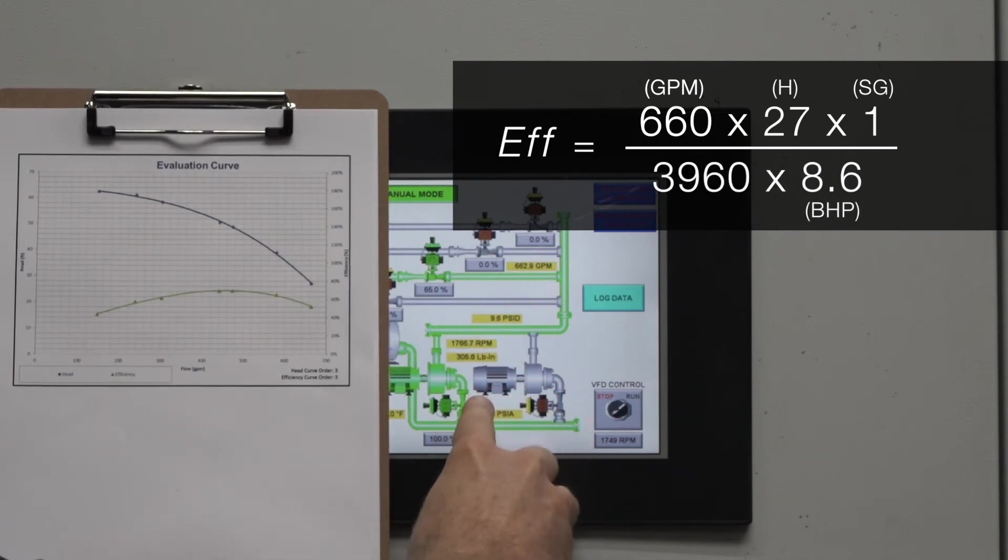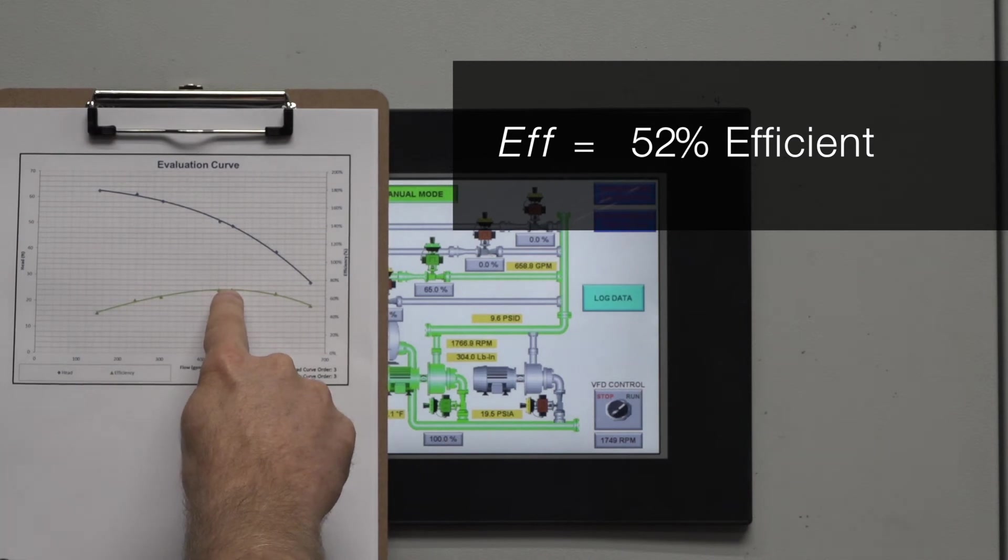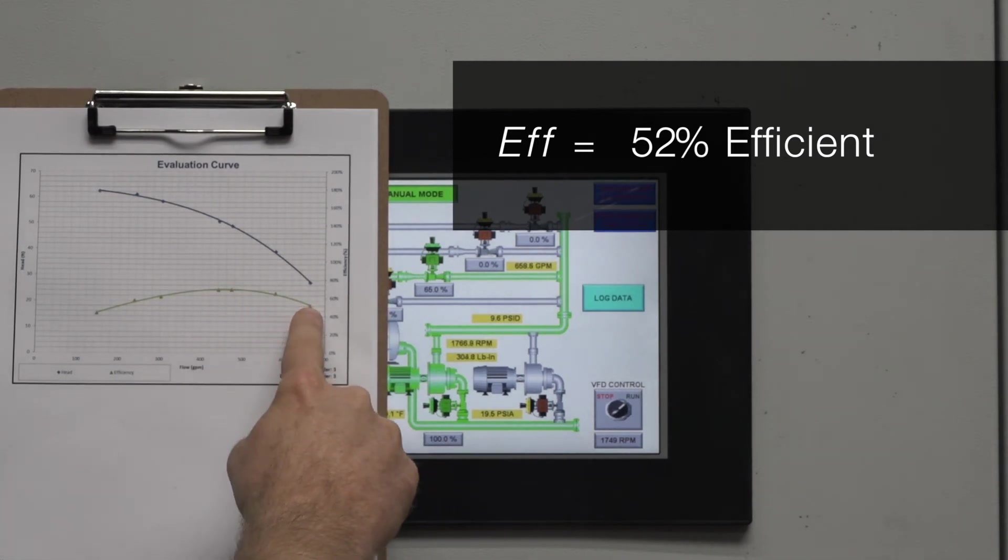If you use this data and you calculate pump efficiency, now the pump is operating at 52 percent efficient which is expected now that we're operating at a higher flow and our efficiency has dropped.